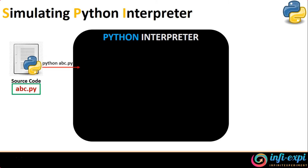Let's hand over the source code into the Python interpreter. To trigger the Python interpreter, we use a command called 'python', followed by a space, and then your source code file — that's nothing but your abc.py. By this way, we trigger the Python interpreter. Post triggering, as you can see, there's a complete black box where the Python interpreter process is going to happen.